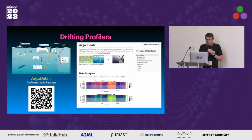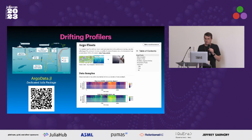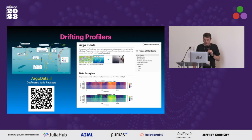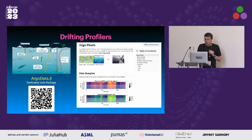One step further, we have so-called drifting profilers or profiling floats, which have already become the backbone of our climate observing system. One drifts at a certain depth but also goes up and down to make continuous measurements of temperature and salinity. This leads to the kind of dataset shown here — temperature versus time and depth. We now have notebooks to query that data and start simulating. This dataset is important enough that I put it in a separate package called ArgoData.jl.